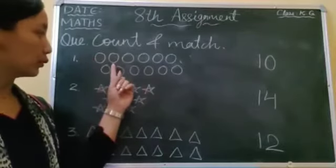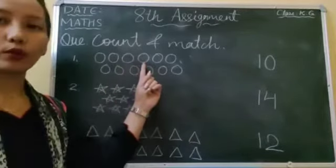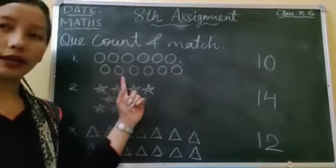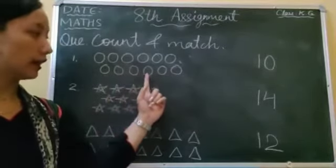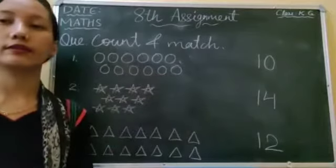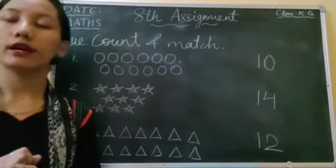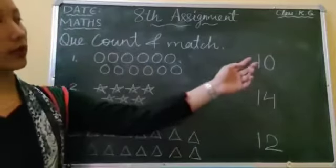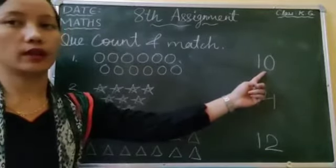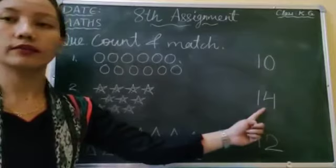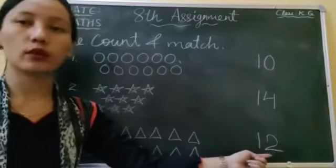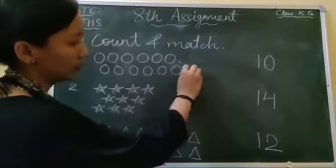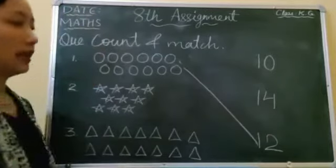One, two, three, four, five, six, seven, eight, nine, ten, eleven, twelve. There are twelve circles. Now let's find number twelve. Is this number twelve? No. Is this twelve? No. Is this twelve? No. Is this twelve? Yes. So match circles to number twelve like this.